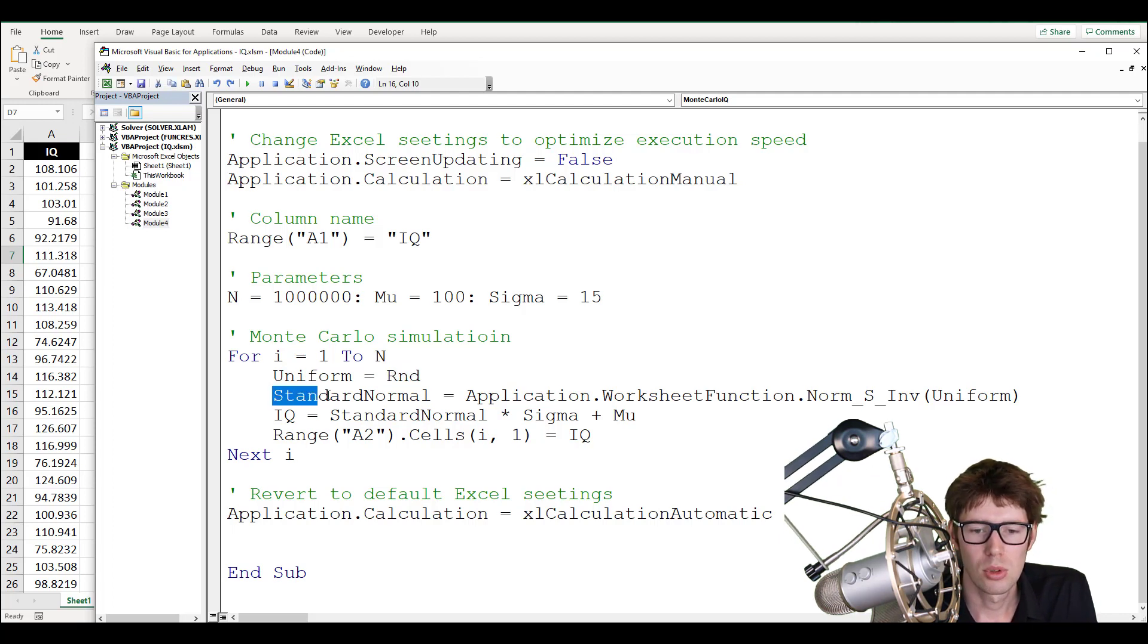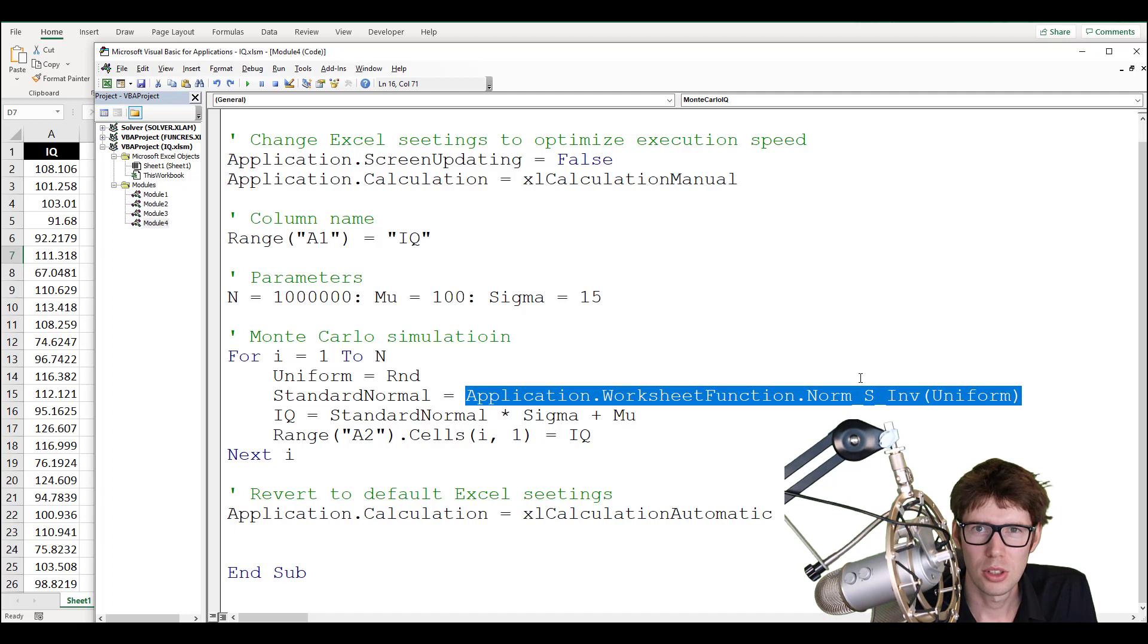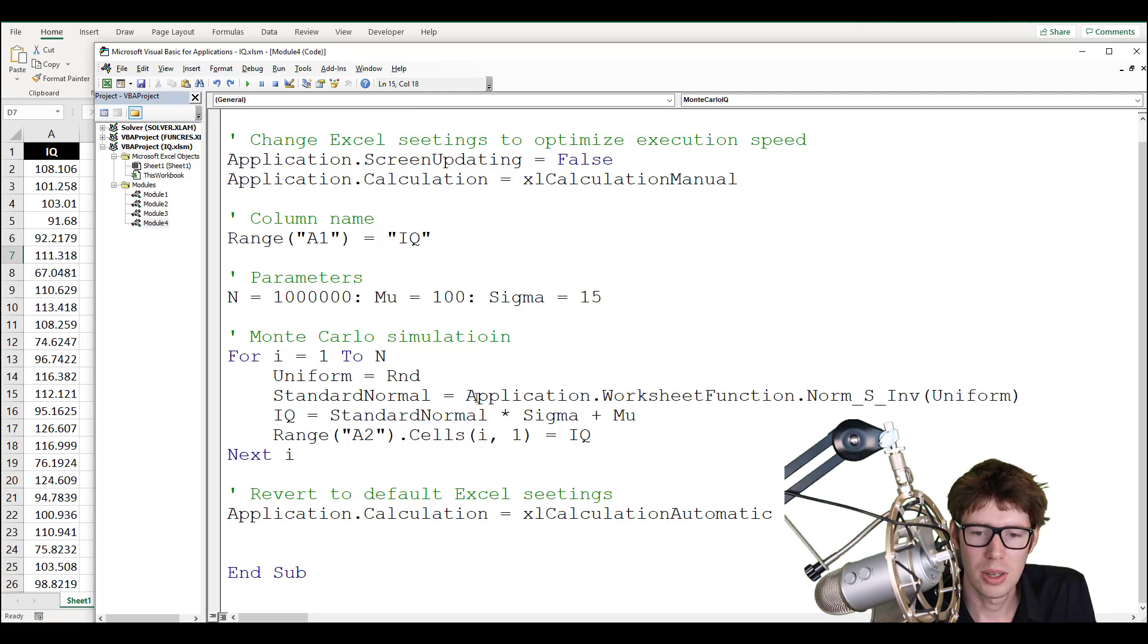Next thing I do is to make a variable called standard normal. And here I want to put in the uniform number inside of the quantile function. And the quantile function in the worksheet was norm.s.inv. And in VBA, you just substitute the dots here with underscore, and you make sure to first write application.worksheet function. Application is just Excel, so we're accessing from Excel its worksheet function. And specifically, we are accessing the norm.s.inv function. So this is essentially just a quantile function. And the input is the output of the pseudo random number generator, which is up here.